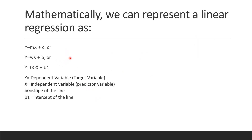There are different ways to represent the linear equation — the variables used to represent slope and intercept might change. In the first equation, the variables are m and c; in the second equation they are w and b; and in the third equation they are b0 and b1. But they all represent the same things: slope and intercept, where y is the dependent target variable and x is the independent predictor variable.